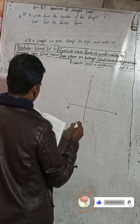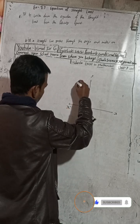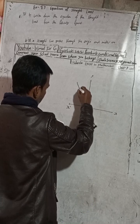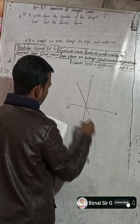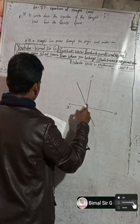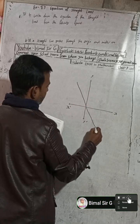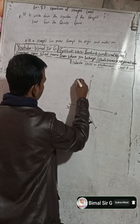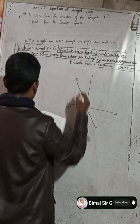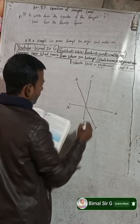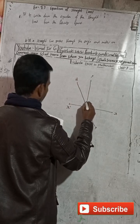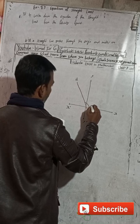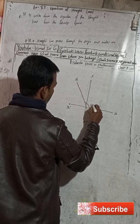The line PQ is passing through the origin. The angle from X axis to the line is 120 degrees.